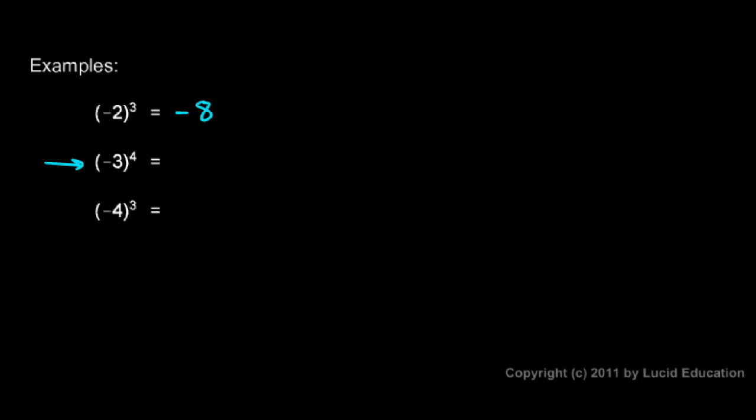In this next example, we have negative 3 multiplied by itself 4 times, so there are an even number of negative signs. We know, without even doing the calculation, the result is going to be positive, because an even number of negative signs multiplied together always gives a positive result. So just multiply 3 four times: 3 times 3 times 3 times 3, and that gives you 81, and the result is positive.